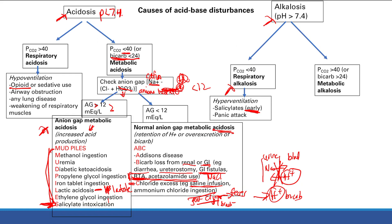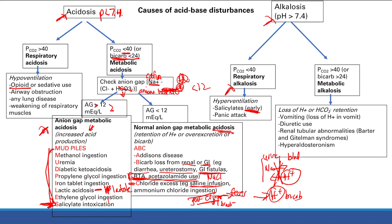Finally, metabolic alkalosis — the problem is you either lose H+ or you retain bicarb. Vomiting causes you to lose H+. What's in your gastric juices? You have a bunch of HCl — if you vomit all that out, you're losing all that H+, and you get metabolic alkalosis. Diuretic use and renal tubular abnormalities are pretty much the same basic problem.